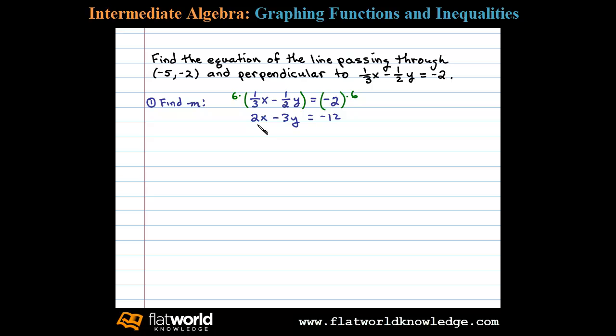Now at this point we'll subtract 2x on both sides. That leaves us with -3y = -2x - 12.